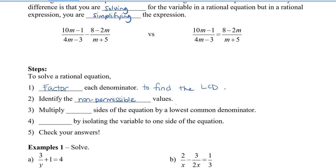The third step is where it is different from simplifying a rational expression. For rational expressions, we would multiply the top and bottom so that we can combine the denominators together. However, now what we're going to do is multiply both sides of the equation by the lowest common denominator. The reason we're doing this is so that we will cancel off the denominator.